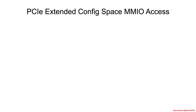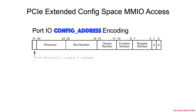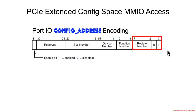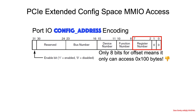When it comes to indexing into memory-mapped IO, it looks different from port IO. In port IO, there are eight bits for the offset, three bits for the function, five bits for the device, and eight bits for the bus number. Because there are only eight bits for the offset, you can only access hex 100 bytes — 256 bytes — at a time. That's why port IO cannot get you access to the full extended PCIe configuration address space.